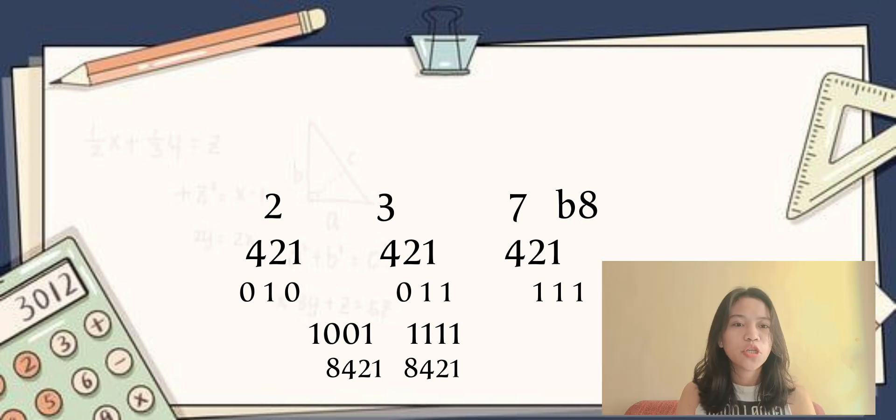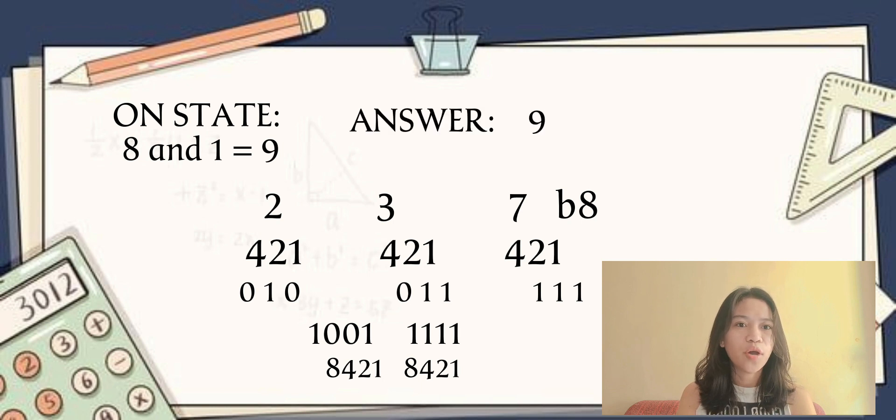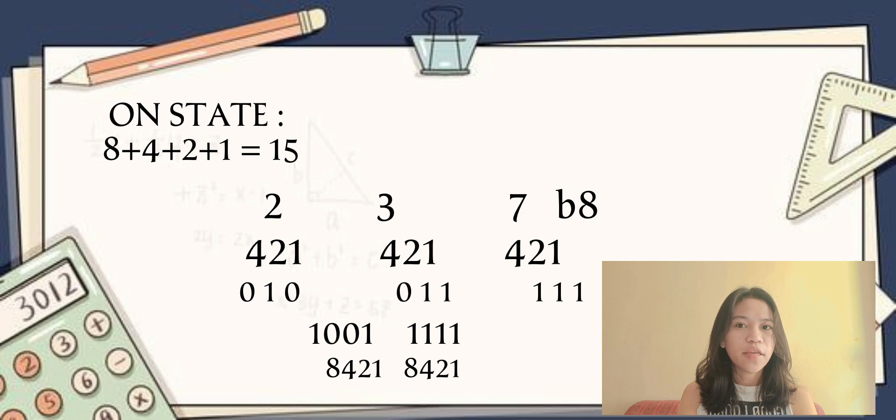To get the answer, you need to add the on state numbers. So we have 8 and 1, add together, so you have 9. And you have 8, 4, 2, 1, which has an on state number, so you need to add.